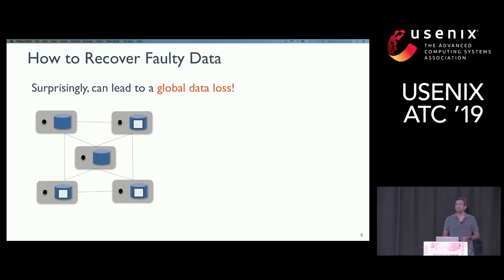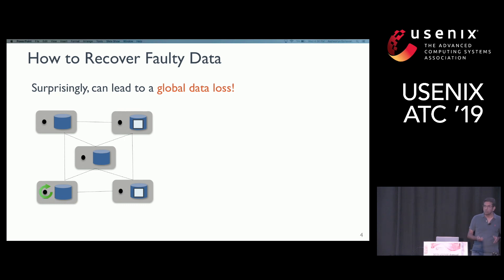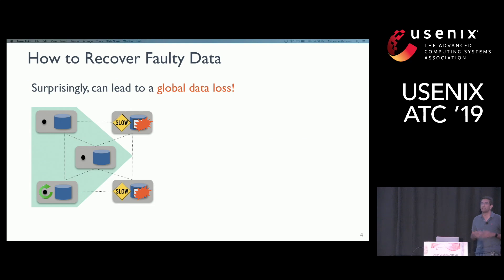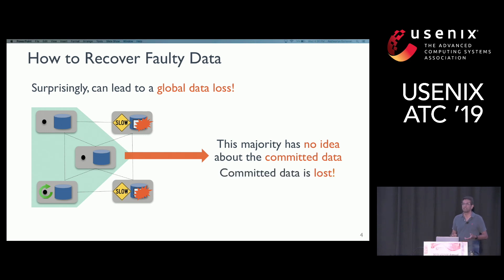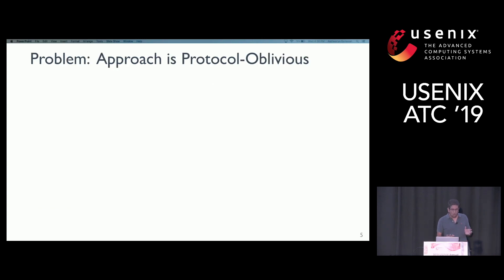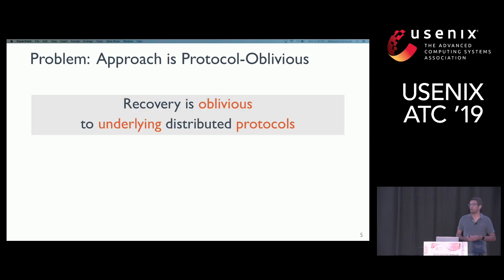The reason for this is, take this case where the data was initially replicated to a bare majority of servers. One copy gets corrupted because of a disk problem. According to this approach, we delete the data and restart the node. At this point, it's possible that the nodes that have the data could be operating slowly or could have crashed. Furthermore, the nodes with no idea about the committed data could form a majority and elect a leader among themselves, causing the system to lose the committed data.